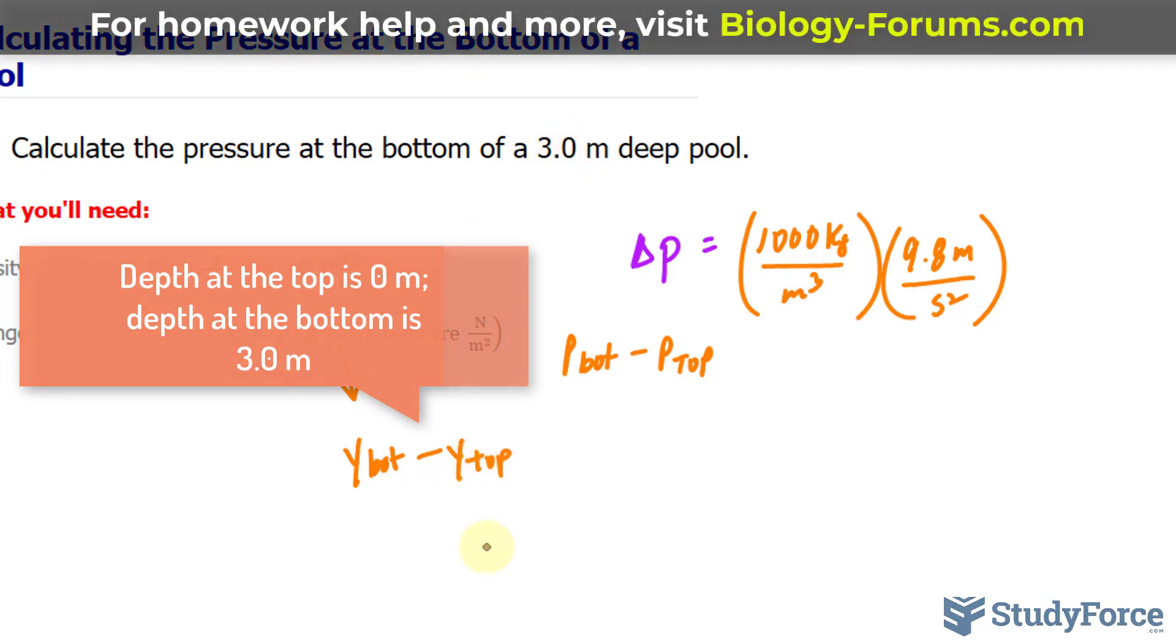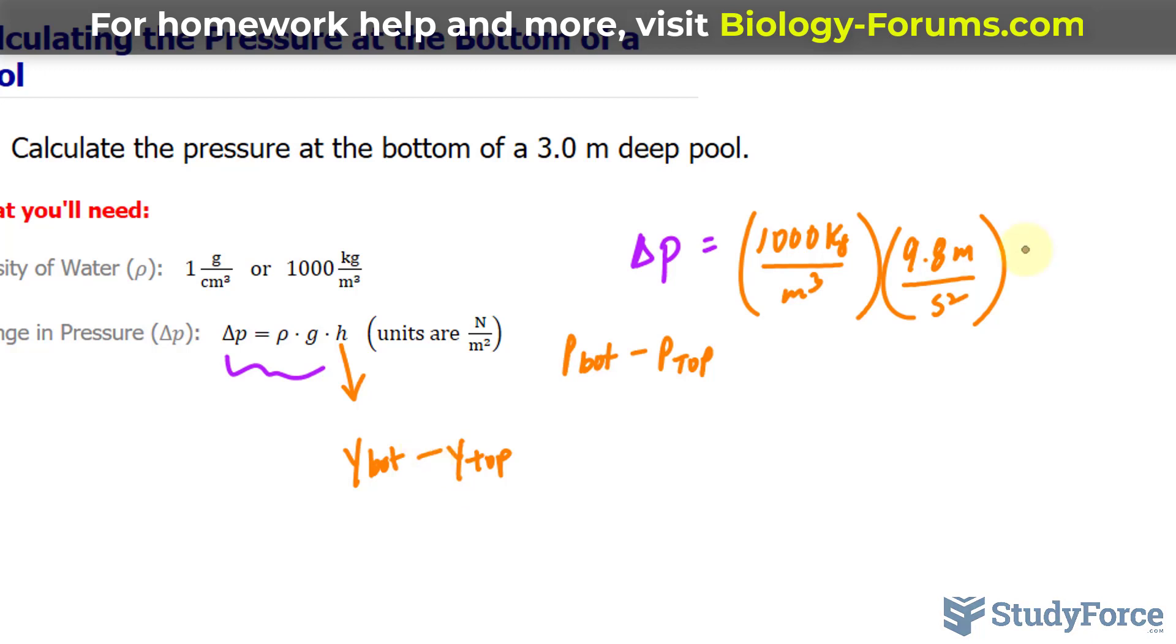In this case, it's 3.0 minus 0. The height at the top is 0. So I'll multiply this by 3.0 meters.